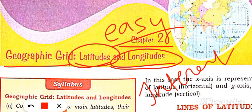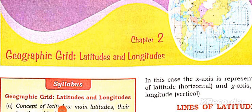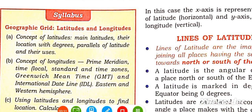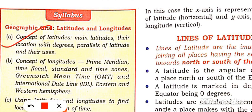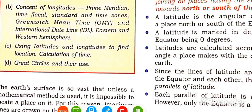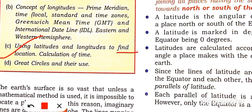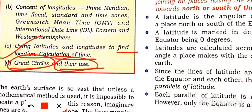All chapters can be interesting, but there is no chapter easier than this. So just listen carefully, because it is a super easy chapter. In this chapter we will learn the concept of latitudes, concept of longitudes, using latitudes and longitudes to find location and calculation of time, and we will see great circles and their uses.